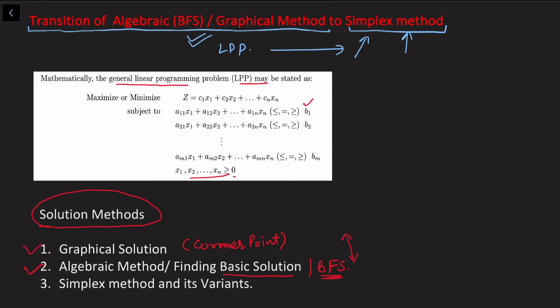We have also seen that there is a one-to-one correspondence between basic feasible solutions and corner points. Now as we move to the third method — the simplex method and its variants, which may include the Big M method or the two-phase method — I want to understand how this transition takes place from basic solution to the simplex method.